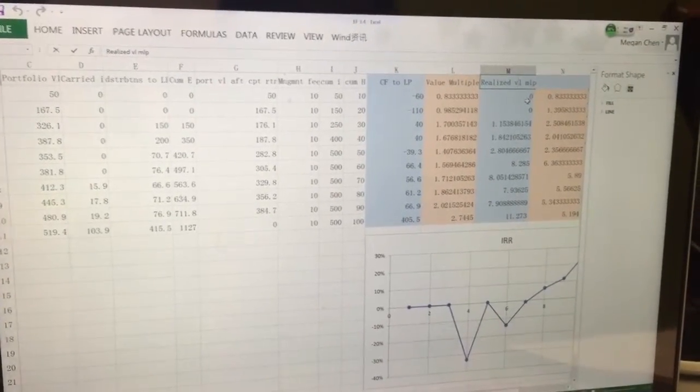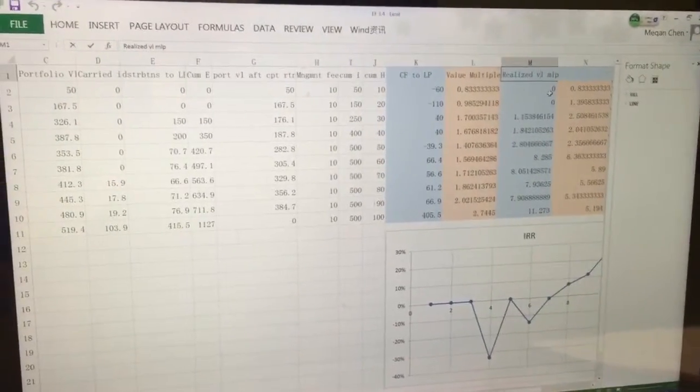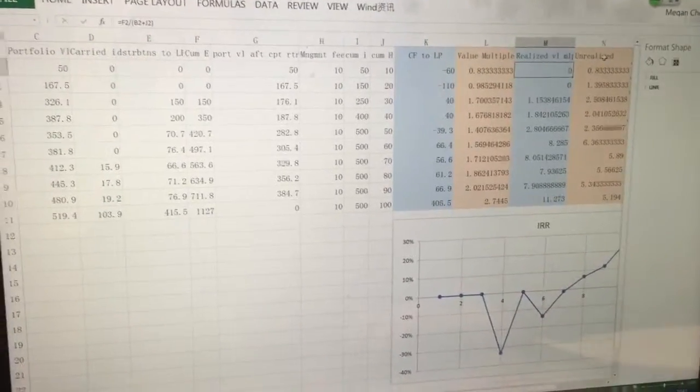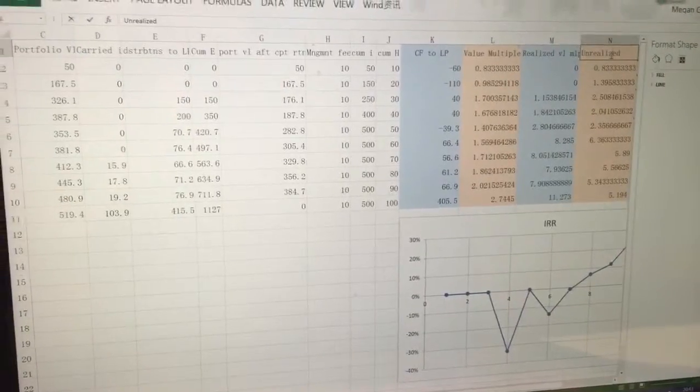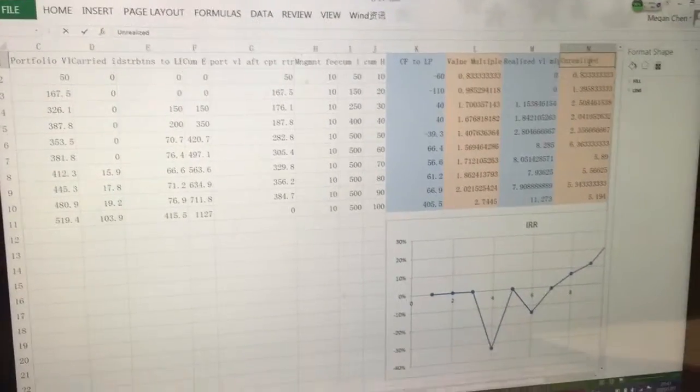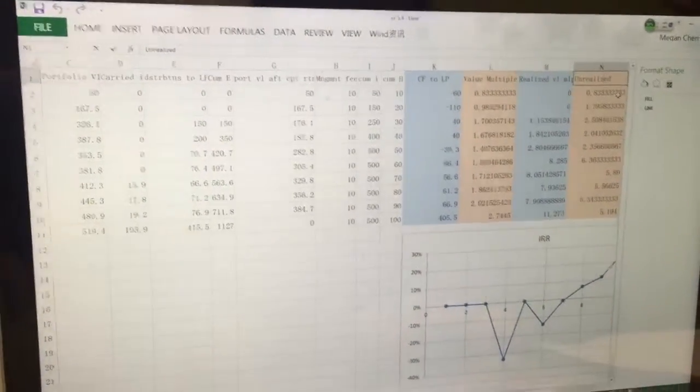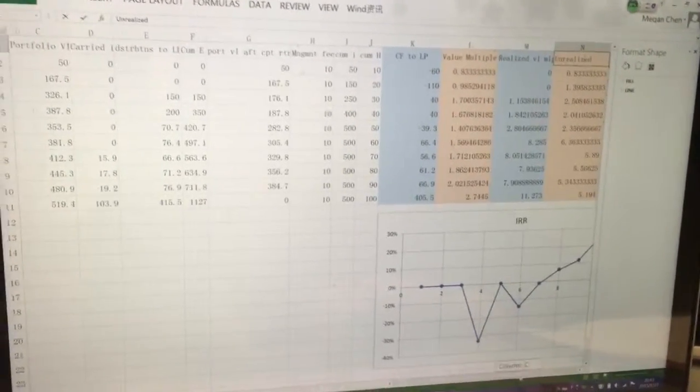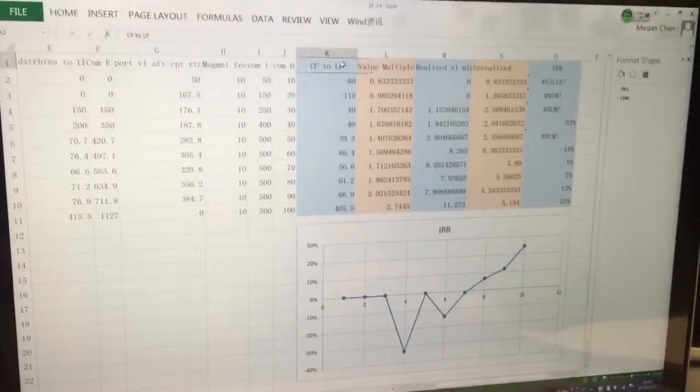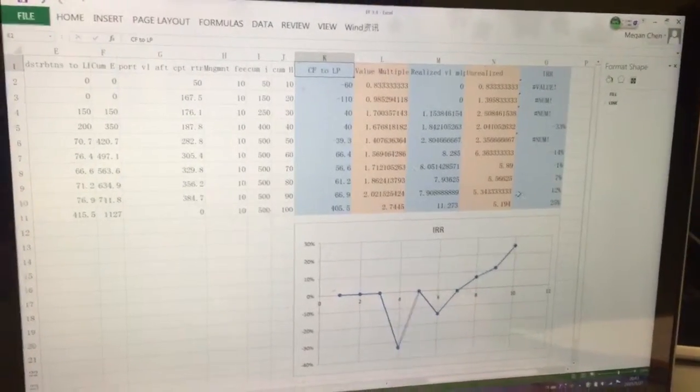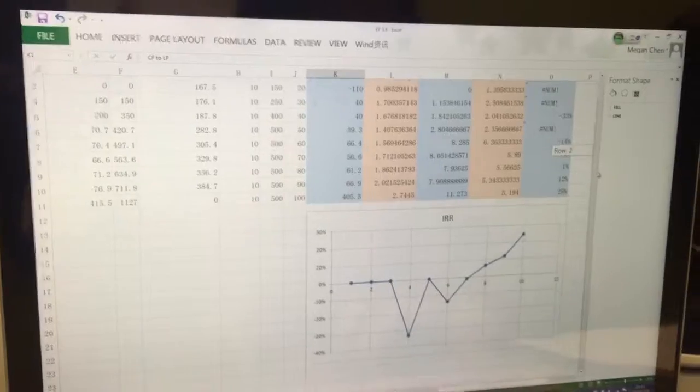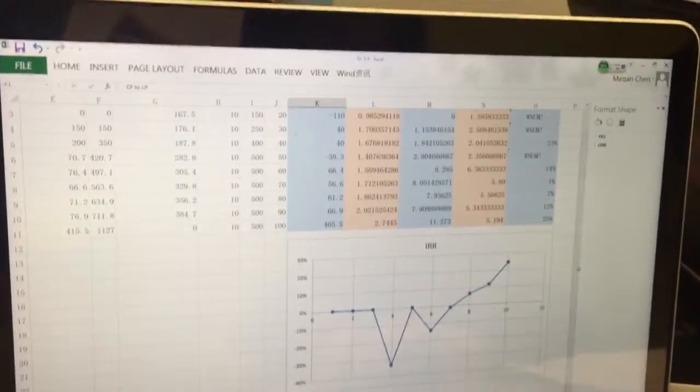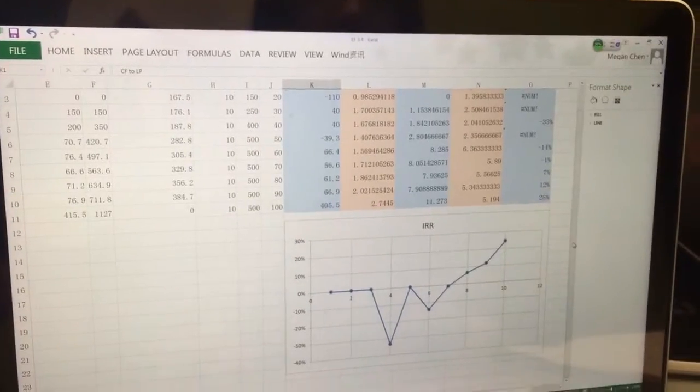For the real value multiple, we only use portfolio value as the numerator. And then we calculate the internal rate of return using cash flow to LPs. And as the results showed in the chart, we can see that the IRR is not a typical J-curve.